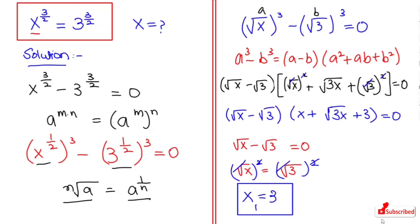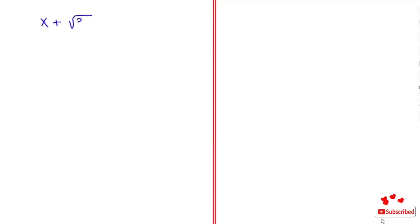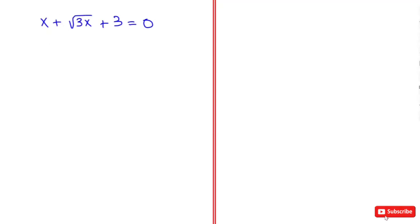Now I am going to solve the second case. The second case we have is x plus root 3x plus 3 is equal to 0. Now I am going to rearrange this. I am going to take root x and root 3 to the right hand side so it will turn to negative root x and negative root 3.